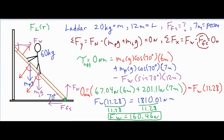The force of the wall comes out to 160.46 newtons. We are essentially done. Since our x-direction equation states that the force of the wall minus the force of static friction equals zero, the force of the wall equals the force of static friction. Therefore, the force of static friction is also 160.46 newtons. I hope that was helpful in setting up and solving for the force of static friction for a ladder in equilibrium — thank you for watching.